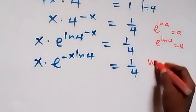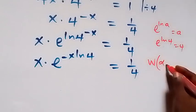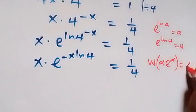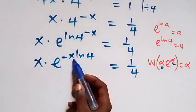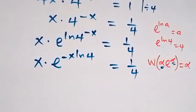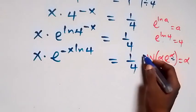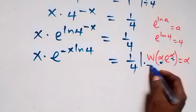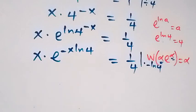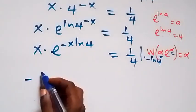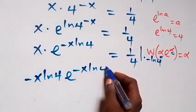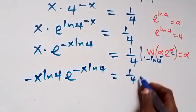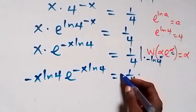From what we have here, to use the Lambert W function, we have W of α·e raised to power α equals α. That is, the power and the coefficient of the exponent should be the same thing. Here we have minus x·ln(4) and just x, so we multiply both sides of this equation by minus ln(4). This becomes minus x·ln(4) times e raised to power minus x·ln(4), equals 1 over 4 times minus ln(4), which is minus ln(4) over 4.